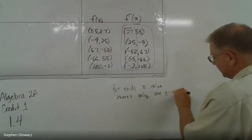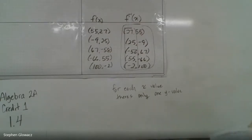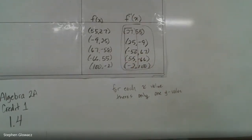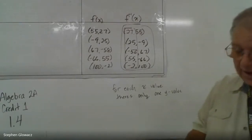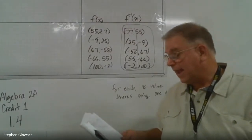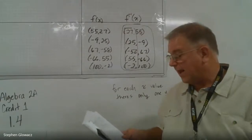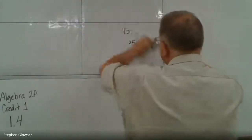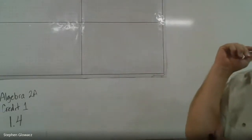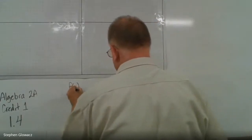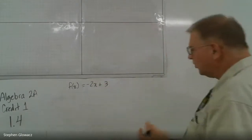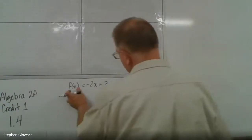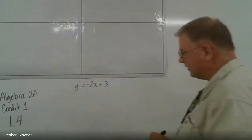Now we're going to talk about how to actually find the inverse of a function. On page 35, for number one, they want us to find the inverse function and graph it. When you have a function and want to find its inverse — we have f(x) = -2x + 3 — first, you can always interchange y and f(x). So we're going to use y instead of f(x), which just makes it easier to work with.